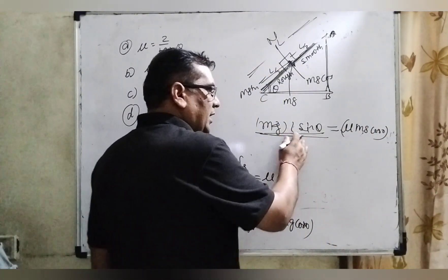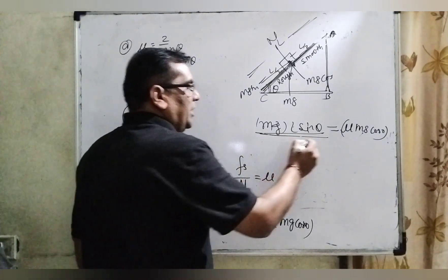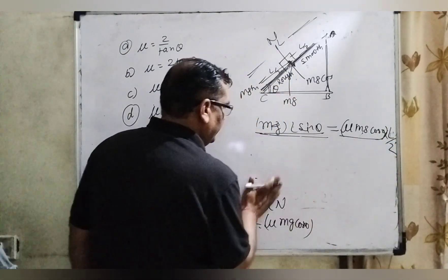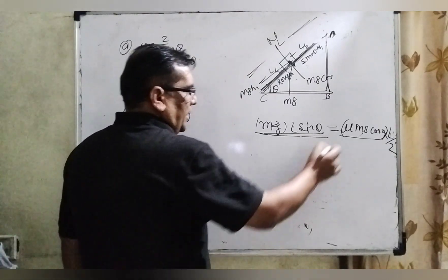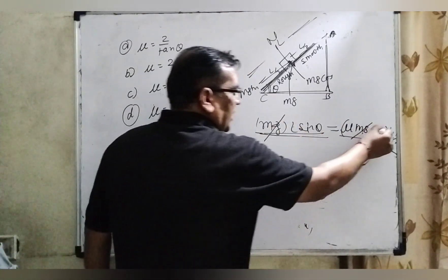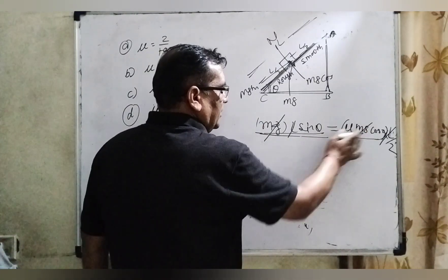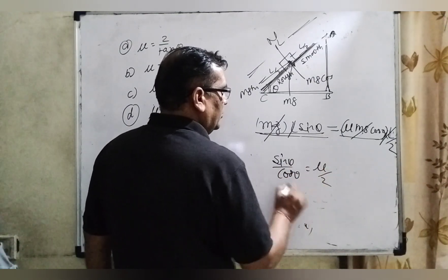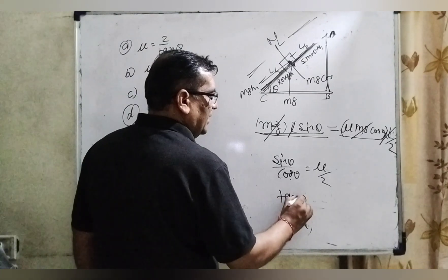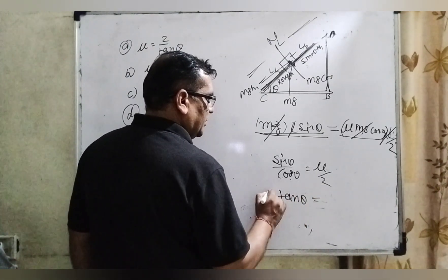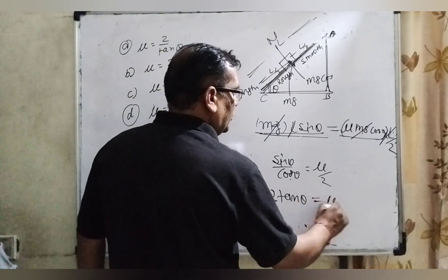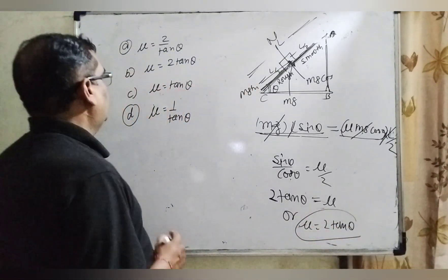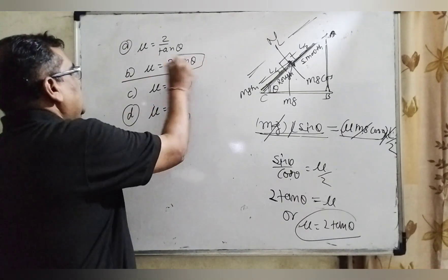The potential energy mg L sin theta equals the friction force mu mg cos theta multiplied by the displacement L/2. So: mg L sin theta = mu mg cos theta times L/2. The mg and L cancel out from both sides. We get: sin theta = mu cos theta / 2. Transposing the 2 to the left side: 2 sin theta = mu cos theta. Therefore mu equals 2 sin theta over cos theta, which is mu equal to 2 tan theta. So option B is the correct answer.